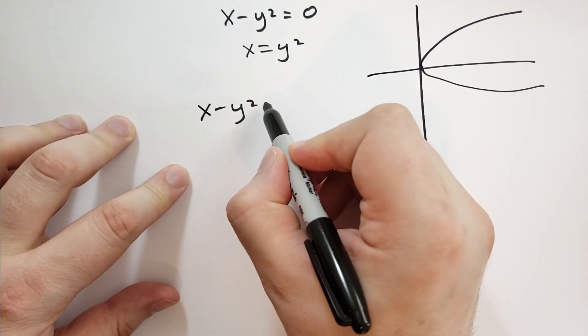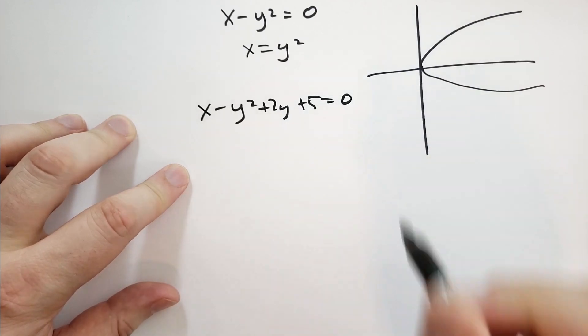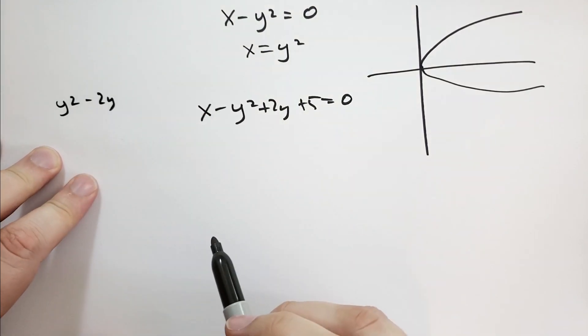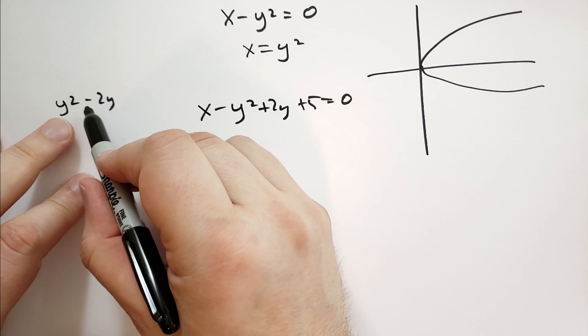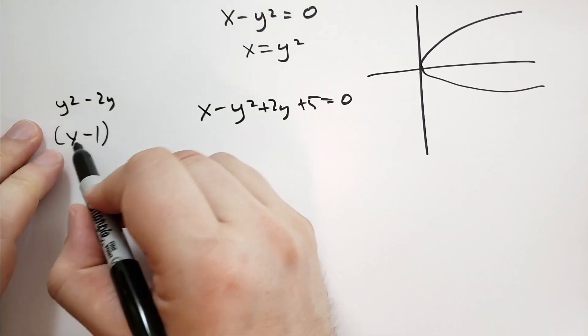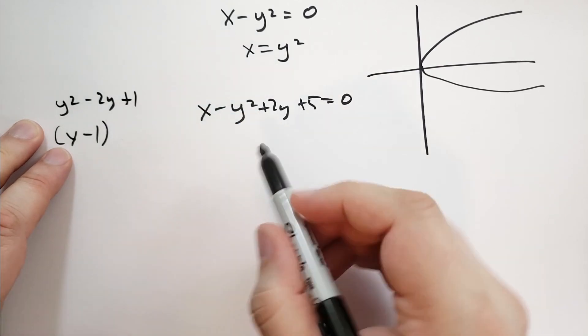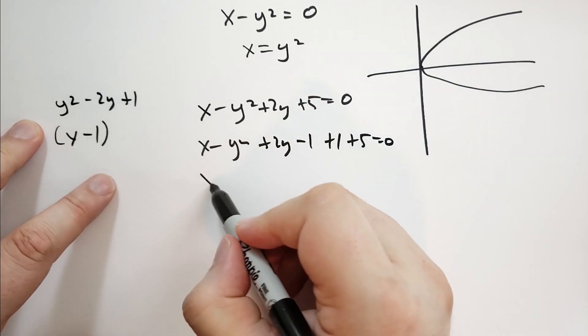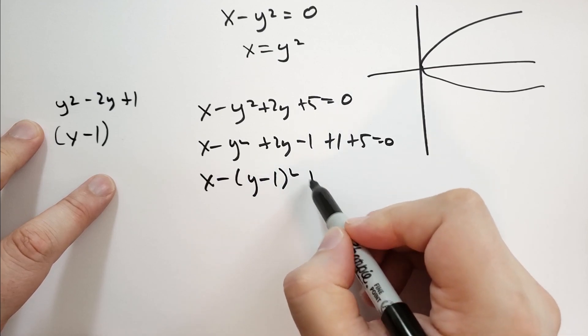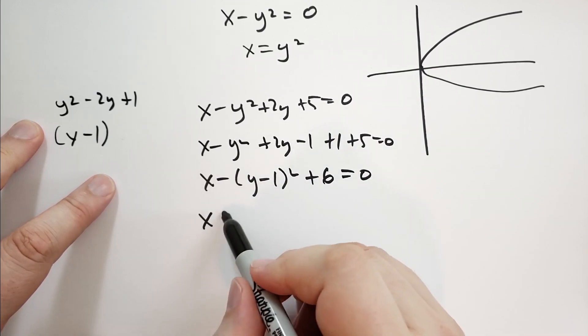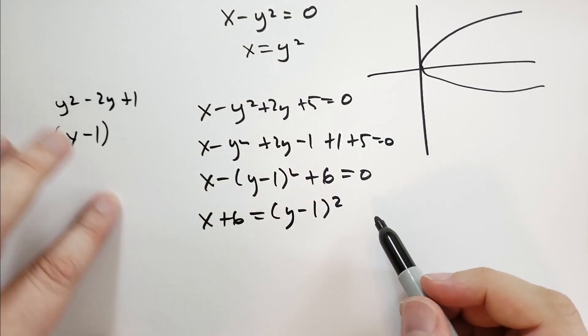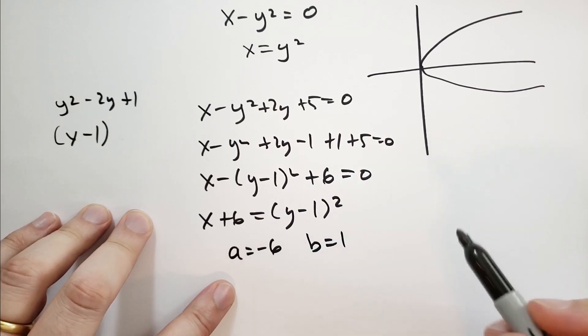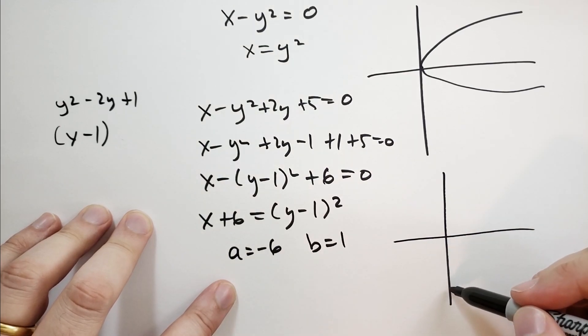And we can do the same kind of situation here. The example is x minus y squared plus 2y plus 5 equals 0. Let's complete the square. We're going to say y squared minus 2y, so it's going to be (y minus 1) squared, with plus 1 at the end. So we need x minus y squared plus 2y minus 1 plus 1 plus 5 equals 0. So x minus (y minus 1) squared plus 6 equals 0, which means x plus 6 equals (y minus 1) squared.